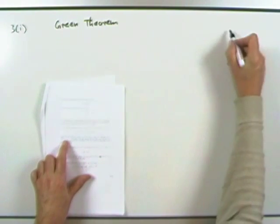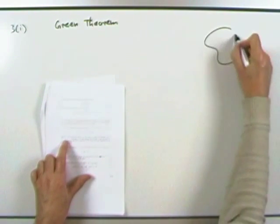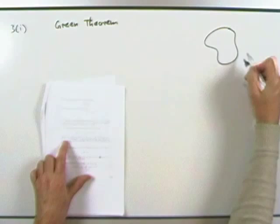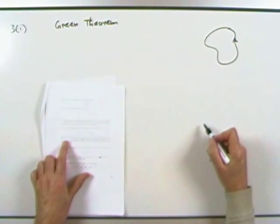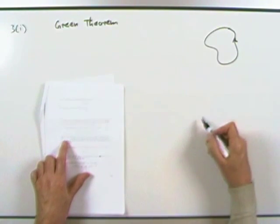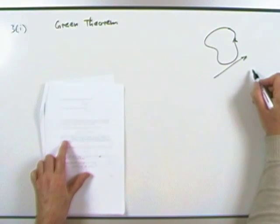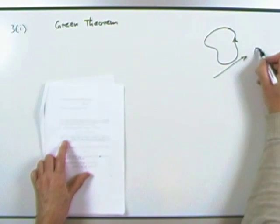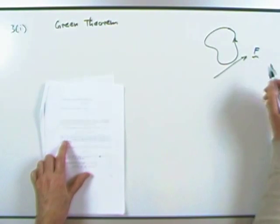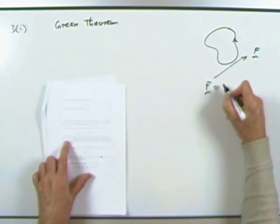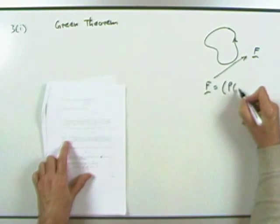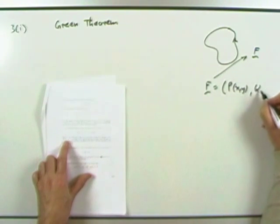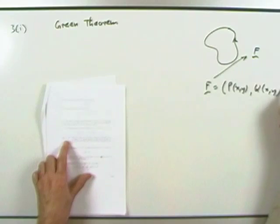Green's Theorem says this: if you've got some simple closed curve that doesn't overlap itself, orientated in the positive direction, and there's some vector field operating throughout that region, where that vector field has components P, some function of x and y, and Q, some function of x and y,